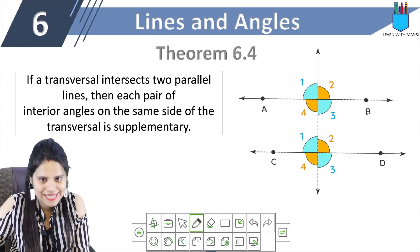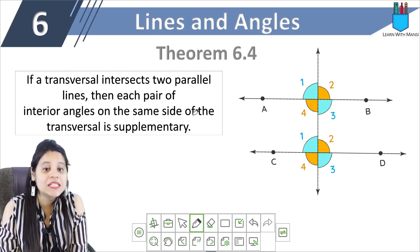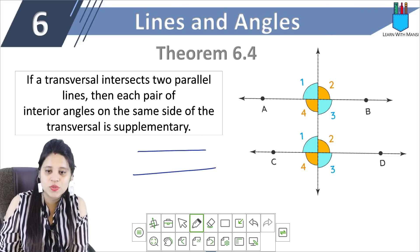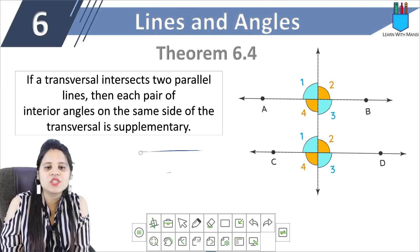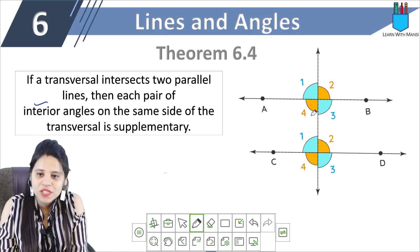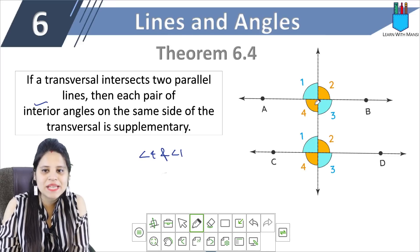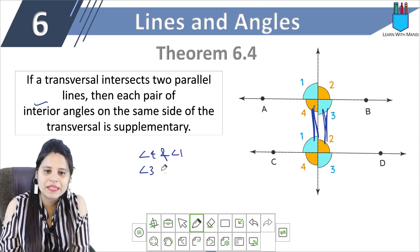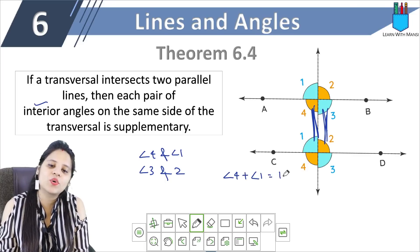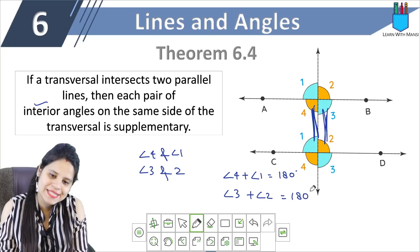Theorem 6.4 says: if a transversal intersects two parallel lines, then each pair of interior angles on the same side of the transversal is supplementary. So, interior angles on the same side of the transversal — angle 4 and angle 1, and angle 3 and angle 2. If AB is parallel to CD, we say angle 4 plus angle 1 equals 180 degrees — they are supplementary. Similarly, angle 3 plus angle 2 equals 180 degrees — also supplementary angles.